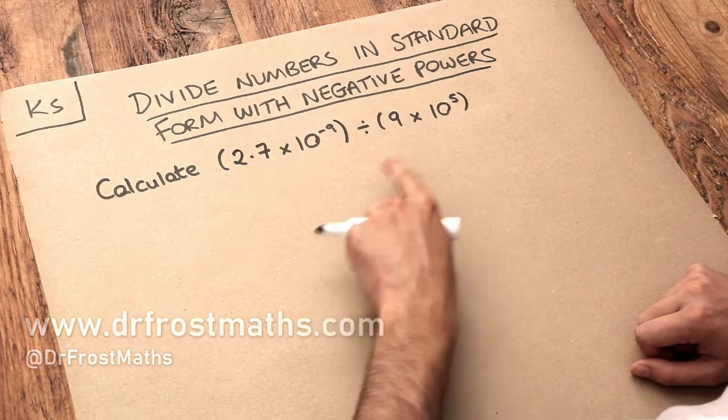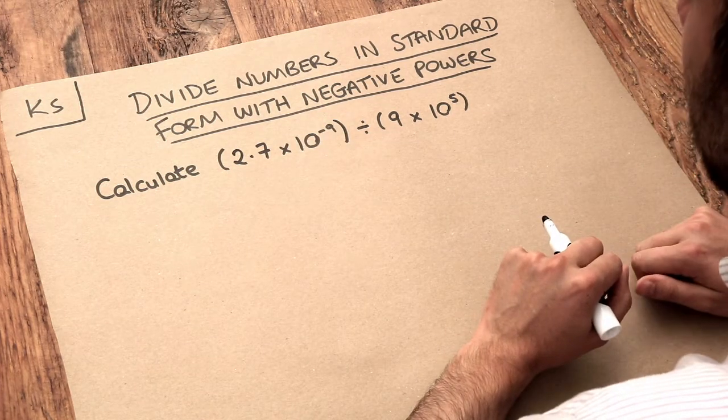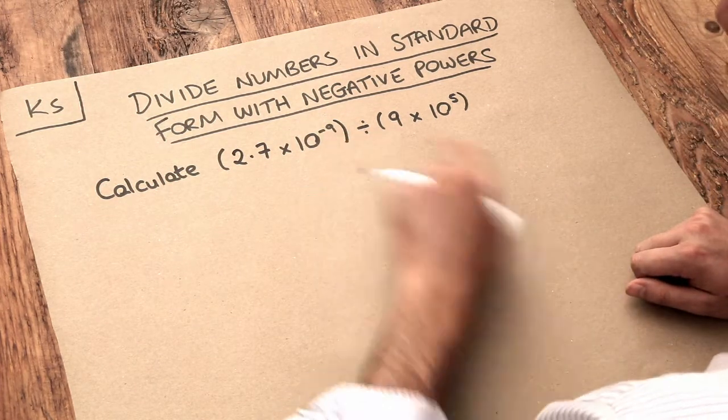Now in the previous video we saw how we can divide two numbers in standard form in general. And the principle here is exactly the same, the only complication is that we've got this negative power here.